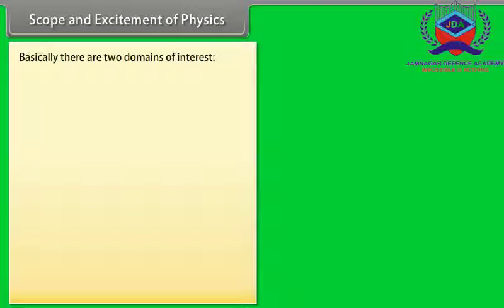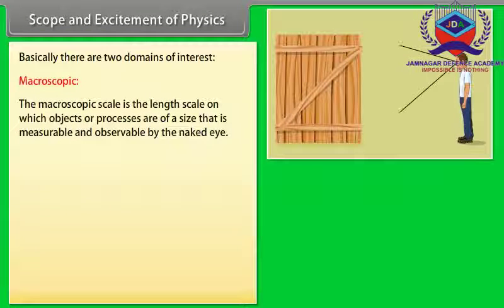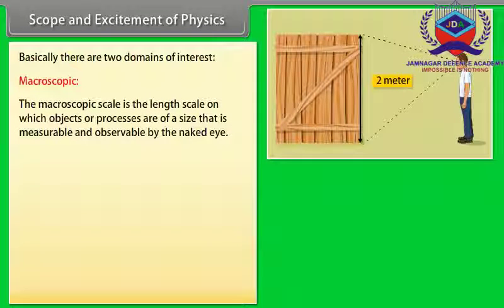Scope and excitement of physics. From a person beginning to work to communication over thousands of kilometers, physics has very wide scope. Basically, there are two domains of interest: Macroscopic. The macroscopic scale is the length scale on which objects or processes are of a size that is measurable and observable by the naked eye.